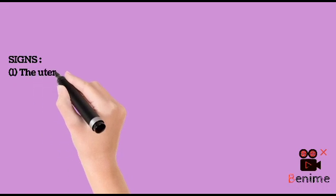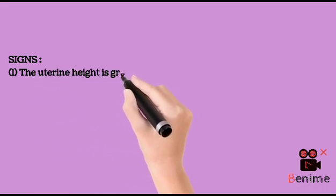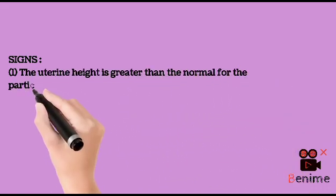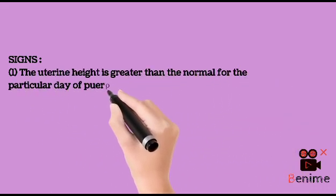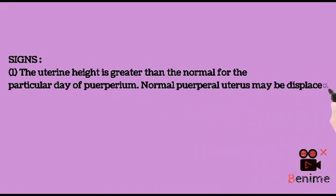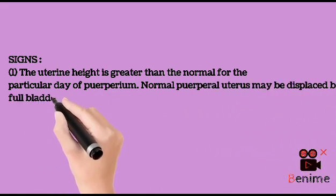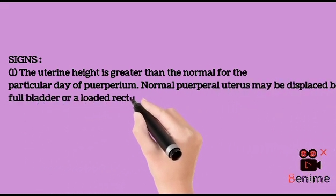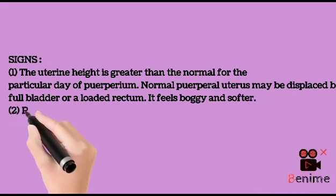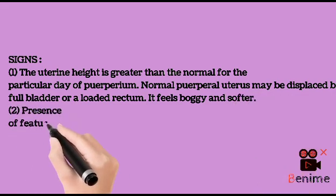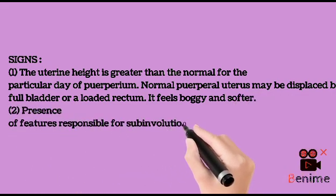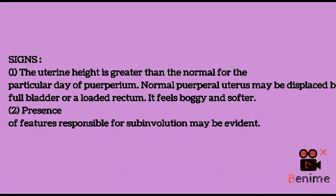Signs. 1. The uterine height is greater than normal for the particular day of puerperium. The normal puerperal uterus may be displaced by a full bladder or a loaded rectum. It feels boggy and softer. 2. Presence of features responsible for subinvolution may be evident.